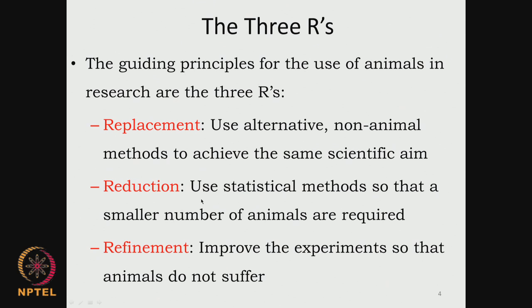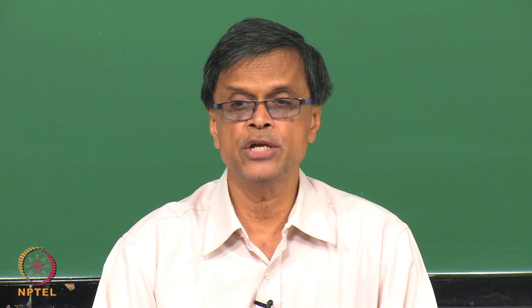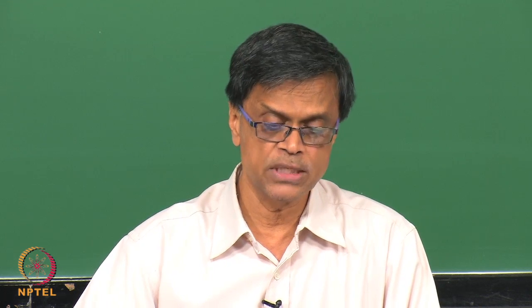Reduction - can we use less number of animals, but at the same time get statistically significant information? Can I use a smaller set of animals? Can I do an implant on two sides of the same animal? That way the number of animals can be reduced. You need to think about all those - that is called reduction.